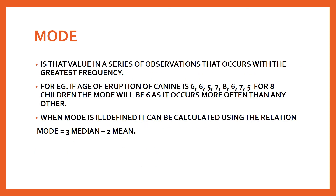Mode is the value in the series of observations that occurs with the greatest frequency. For example, the age of eruption of canine for eight children: if 6 appears three times, 7 appears two times, 5 appears two times, and 8 appears one time, the mode is 6 because it has the greatest frequency - appearing three times in this particular sequence.